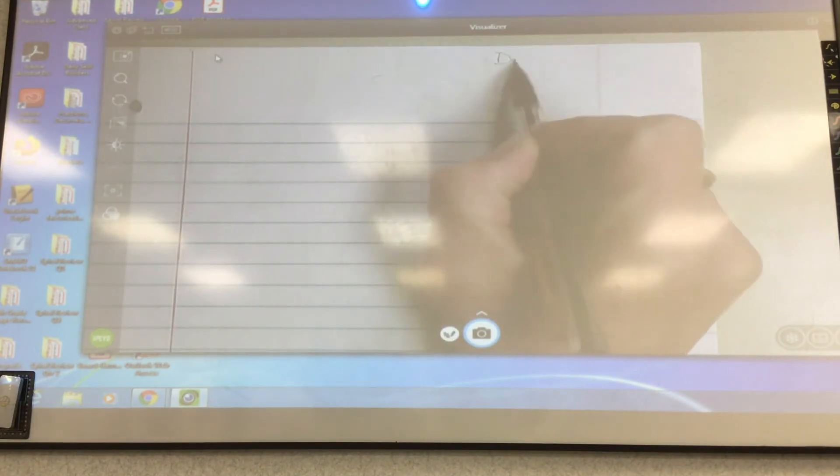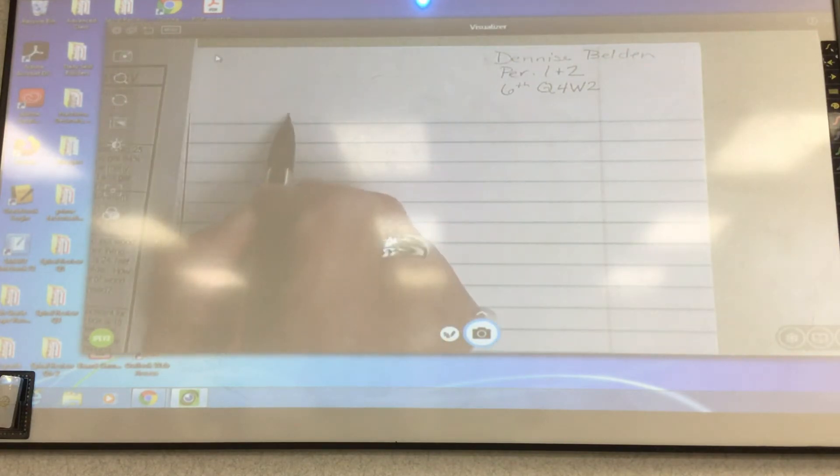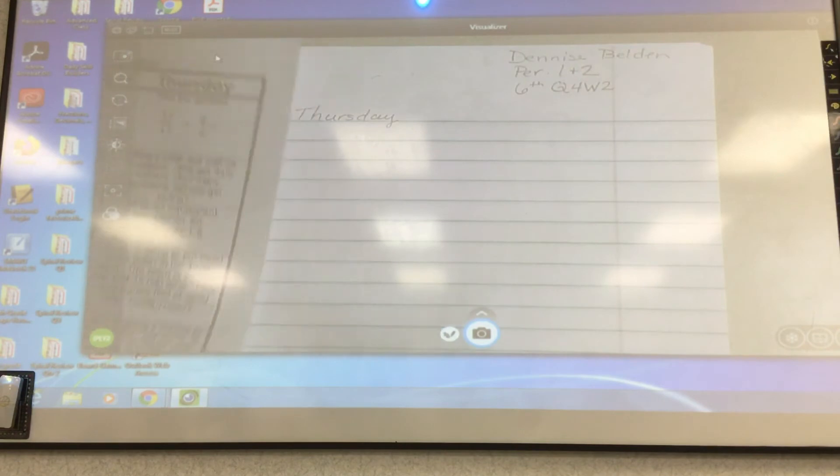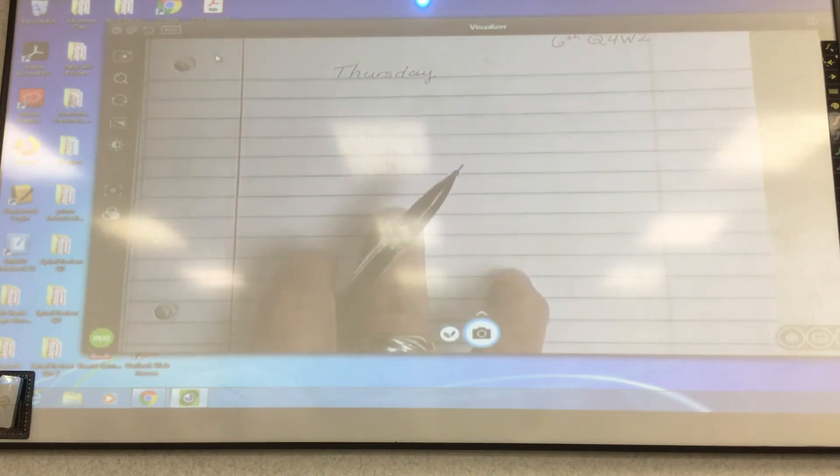And I saw some people yesterday not putting their name at the top right-hand corner. Not putting period, this is one and two virtual students, you guys are period three. Or you can write virtual. And then this is six, quarter four, week two. Next week it'll be seventh grade. And then on the top line, this is Thursday's assignment. Next week, the bell work will just be the spiral review, so you'll be taking a picture of this to submit.